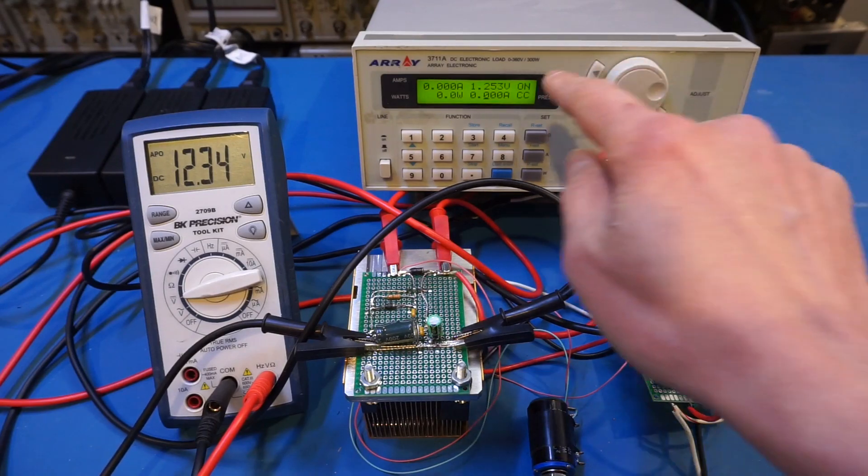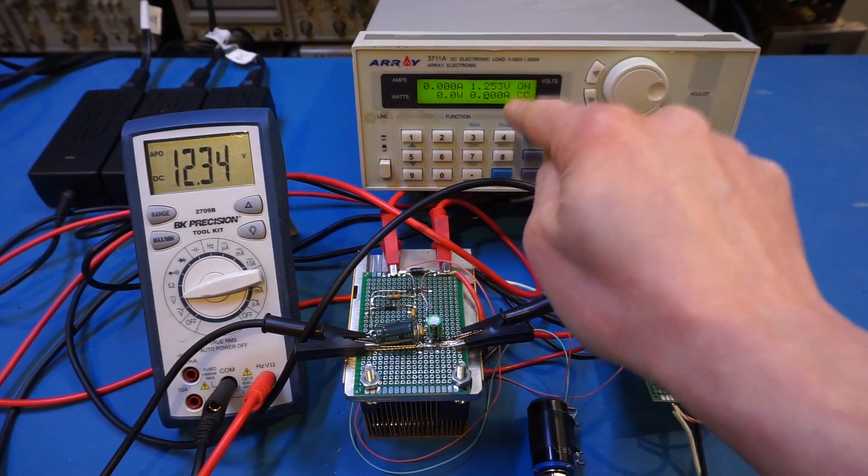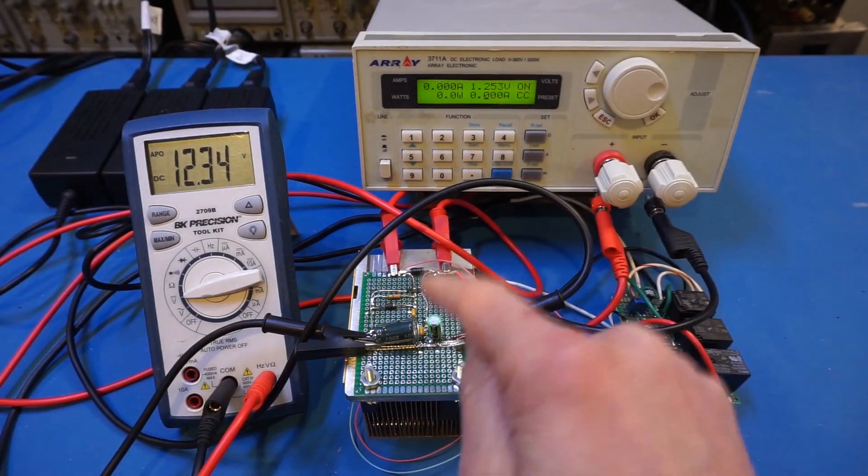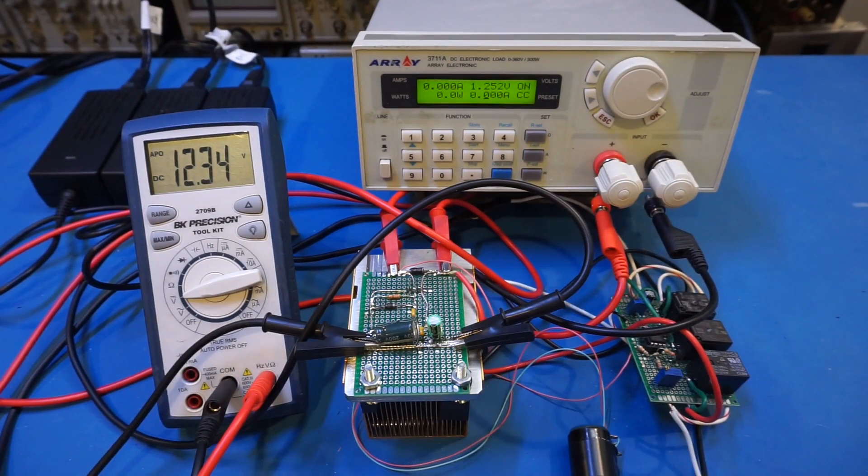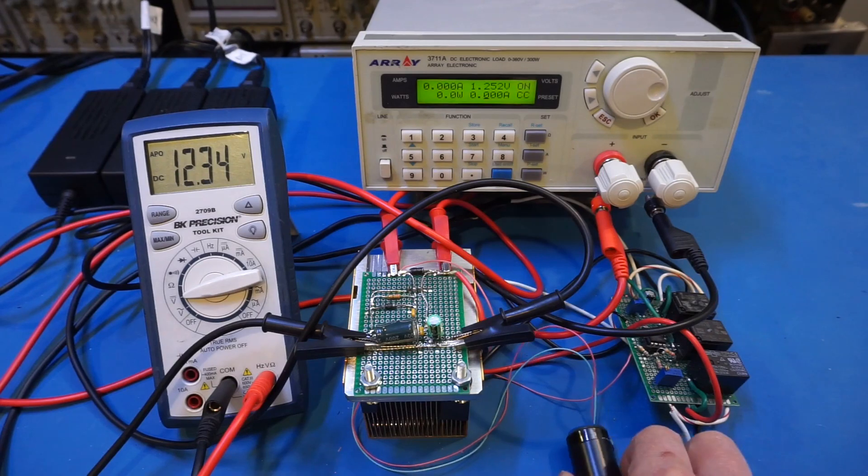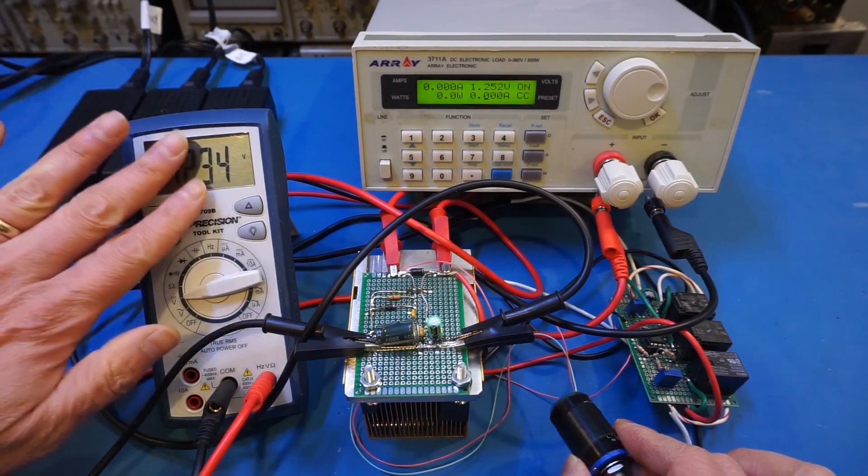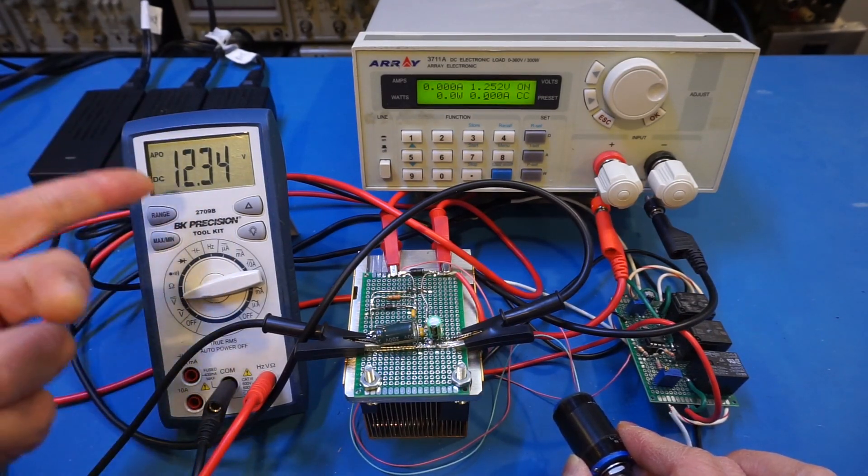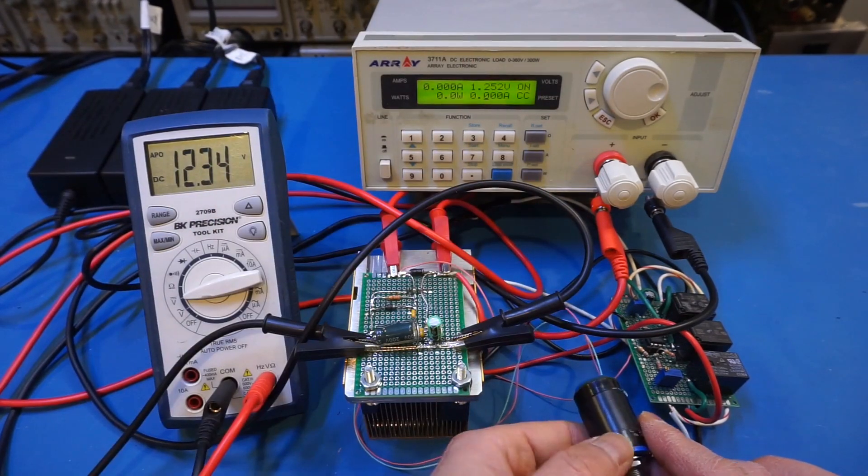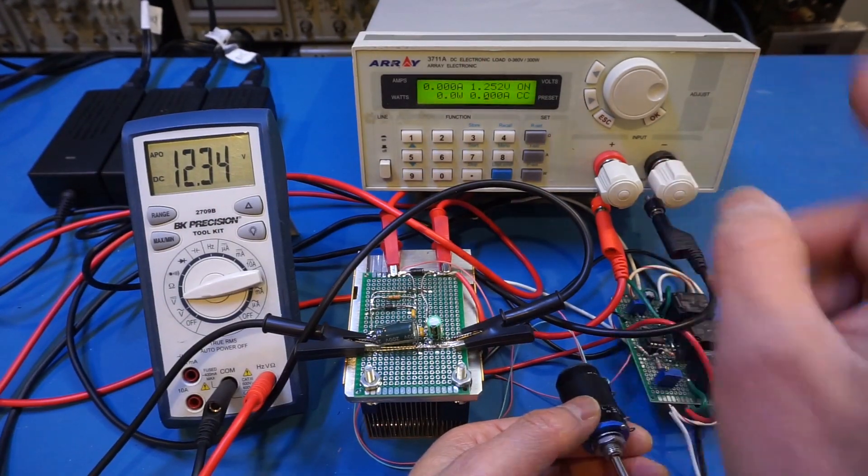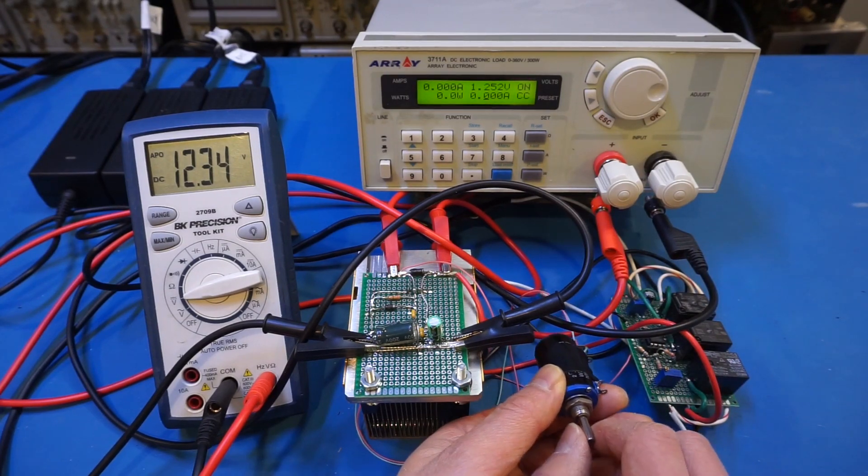And what you see here on the electronic load is the voltage that is currently being outputted from this linear regulator. So now let me start ramping up the output voltage and we'll see on this meter at what point we start seeing the jump. Of course, you should also pay attention to the DC electronic load's output so that you can see what the current output voltage is.